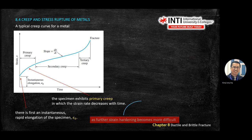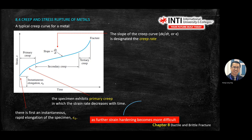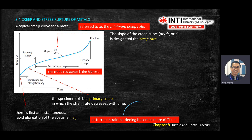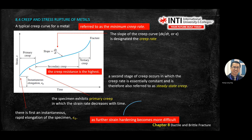In secondary creep you see a more linear form. What we are interested in is the secondary creep — we take the slope, which gives you the creep rate. The slope dy/dx here means your y is strain and your x is time. Creep resistance is highest at this stage. At the middle of secondary creep, it is also called steady-state creep, because this line is almost constant — there is a linear trend of y = mx + c.